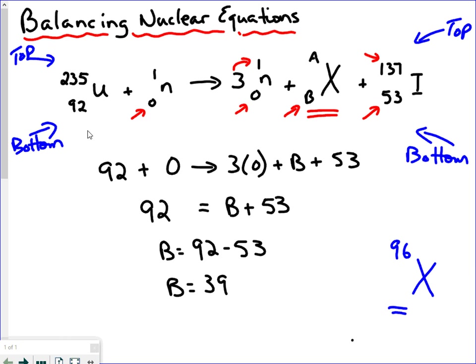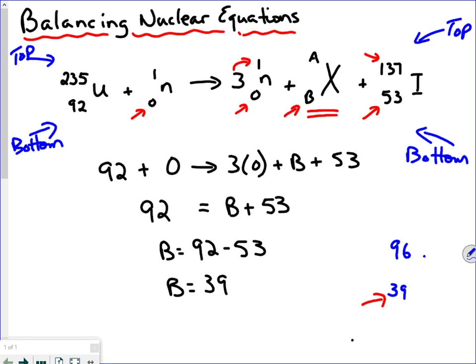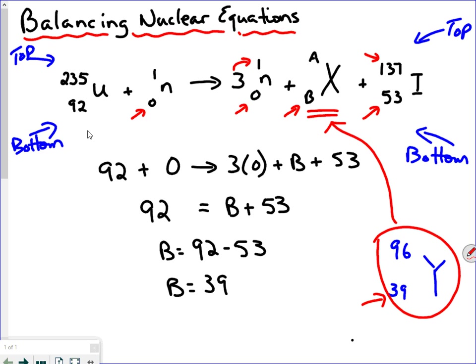So if the value of B is 39, then I can fill in the atomic number of element X as 39. Once I know that atomic number is 39, I can find the identity of X. I just need to go to my periodic table and find element number 39. Element number 39 is yttrium, with the symbol capital Y. So I can now replace X with a capital Y.